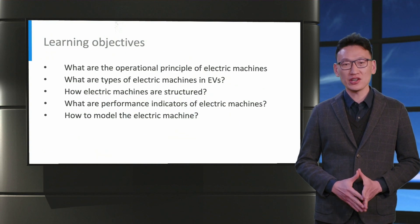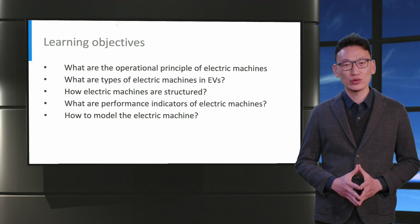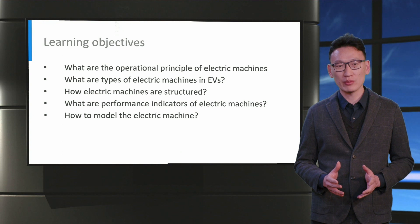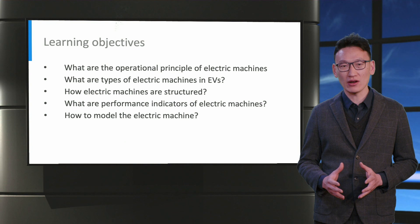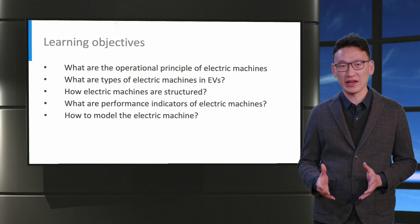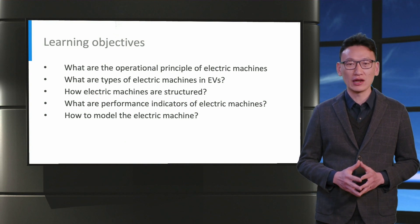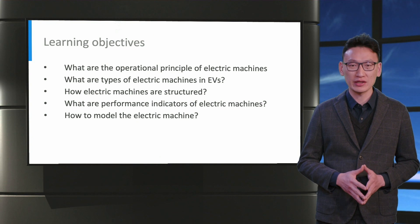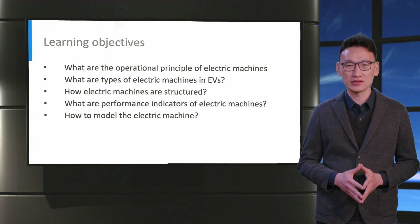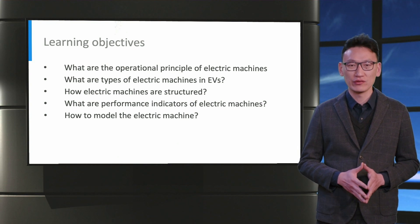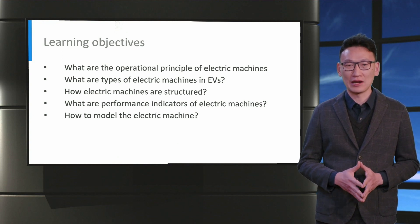The learning objectives of the lecture are as follows. First, we will explain the operation principle of electrical machines. Second, we will explore the different types of electrical machines in EVs. Third, we will learn the structure of the electrical machine. After that, we will look at the performance indicators of electrical machines. At last, we will learn how to model an electrical machine.